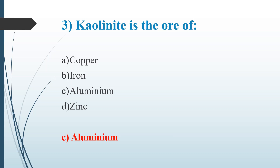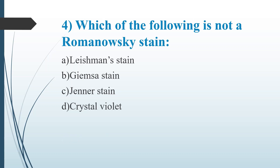Fourth Question: Which of the following is NOT a Romanowski stain? Option A: Leishman stain. Option B: Giemsa stain. Option C: Jenner stain. Option D: Crystal Violet. Answer is Option D, Crystal Violet. Romanowski stain is a neutral stain composed of methylene blue dye. It includes Leishman stain, Giemsa stain, Jenner stain, Wright stain, and May-Grünwald stain.